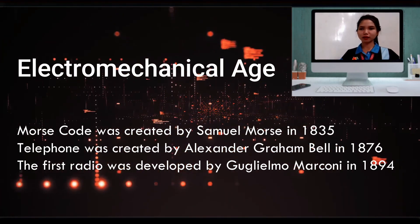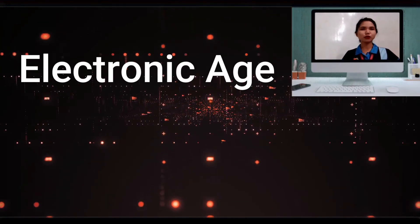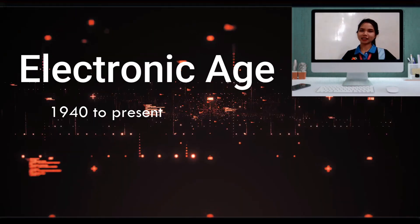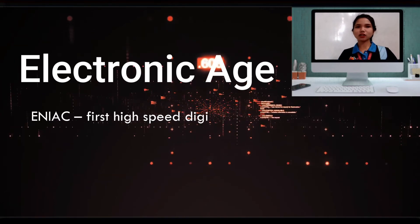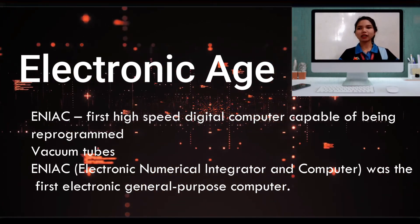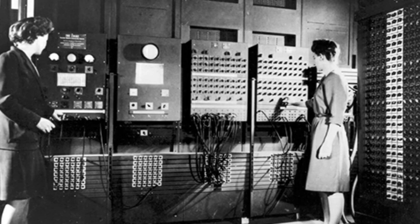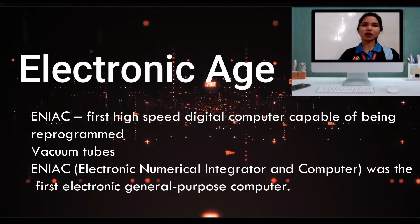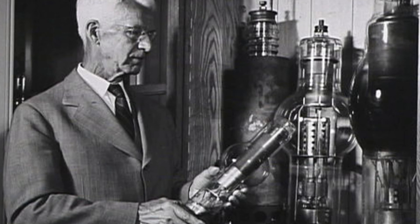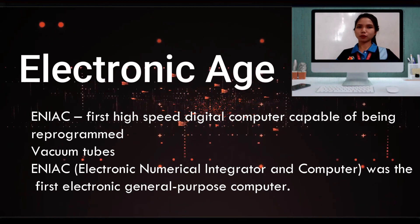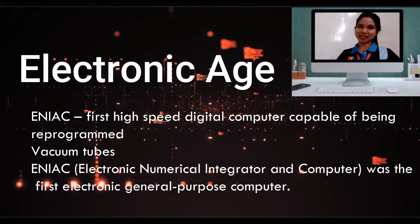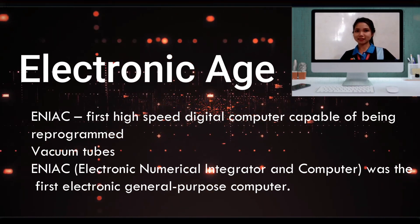The last age of information technology is the electronic age, from the 1940s up to the present. ENIAC is the first high-speed digital computer capable of being reprogrammed, discovered during the electronic age. ENIAC can solve a full range of computing problems, and ENIAC stands for Electronic Numerical Integrator and Computer. At this age, they also discovered vacuum tubes. ENIAC is considered the world's first general-purpose computer. The fourth age — the electronic age — runs from 1940 to the present.